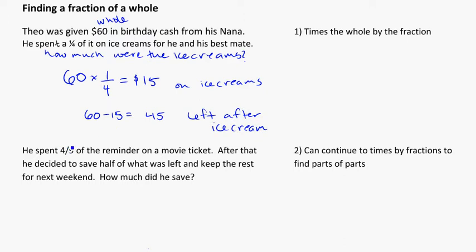That's what we're going to use here. He now spent four ninths of that $45, so 45 times the fraction 4 over 9. He spent four ninths of the money left over after the ice cream, and in this case it equals 20, so he spent $20 on a movie ticket.